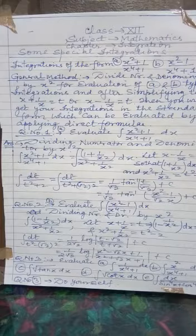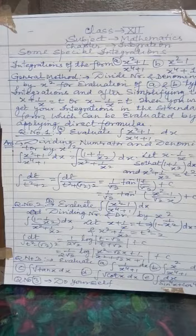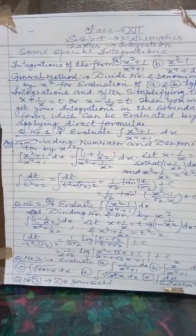That is your final answer for Part B. Now question number 3 you have to do yourself, and it has 5 parts. Part A: evaluate ∫ 1/(X⁴ + 1). Part B: evaluate ∫ X²/(X⁴ + 1). Part C: evaluate ∫ √(tan x). Part D: evaluate ∫ √(cot x). Part E: ∫ dx / (sin⁴x + cos⁴x). In all these 5 parts you have to apply the same method. Go through this, make a note of it — these are important integrals evaluated only by this method — then solve question number 3 and show it to me today.